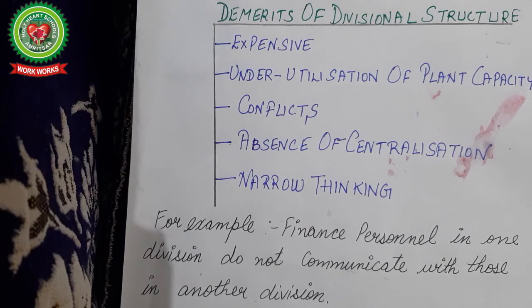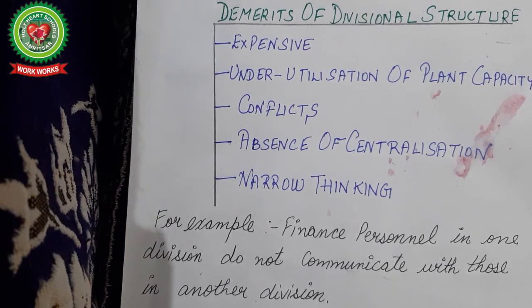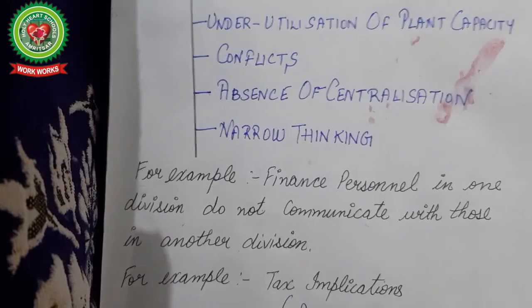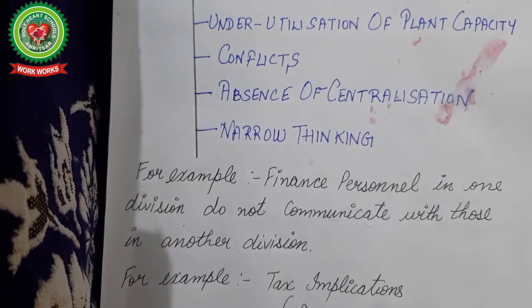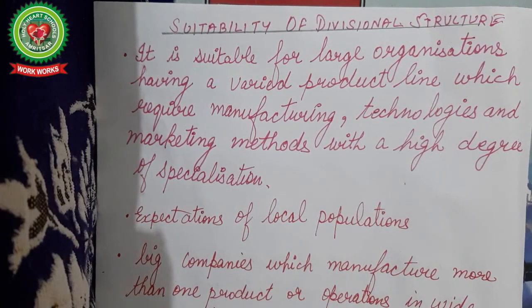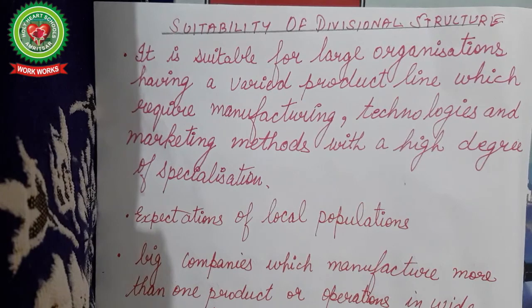Moreover, there is no centralization, and functions like accounting and financing get disturbed. Achieving organizational goals becomes difficult, so it has a narrow approach. For example, finance personnel in one division do not communicate with those in another division. Another problem arises because of tax implications. These are the few demerits of divisional structure.